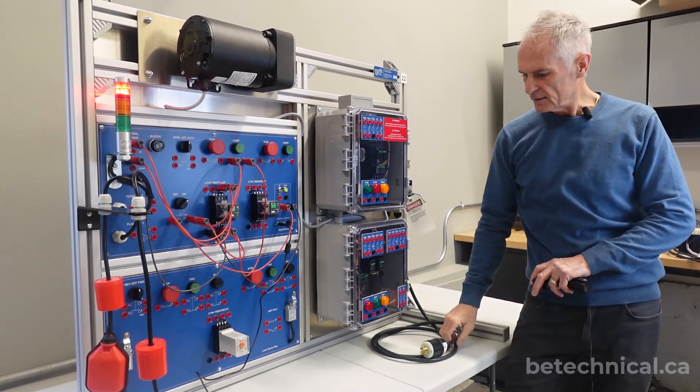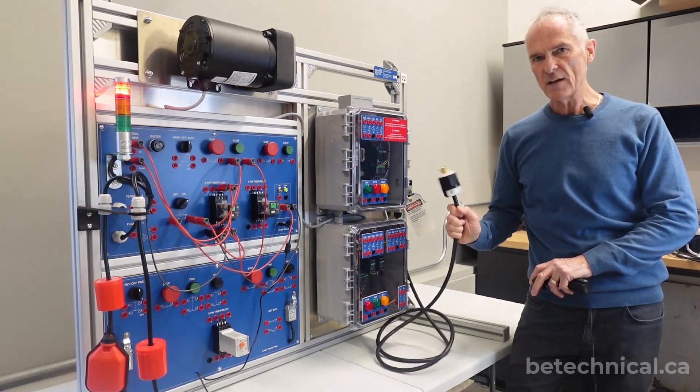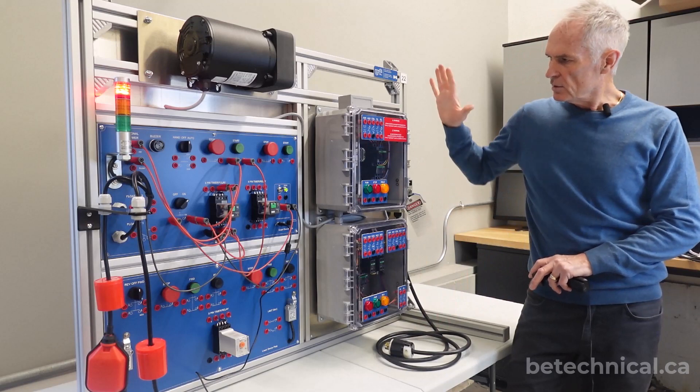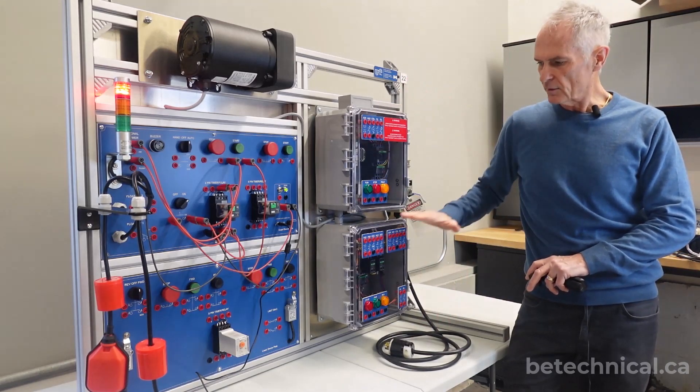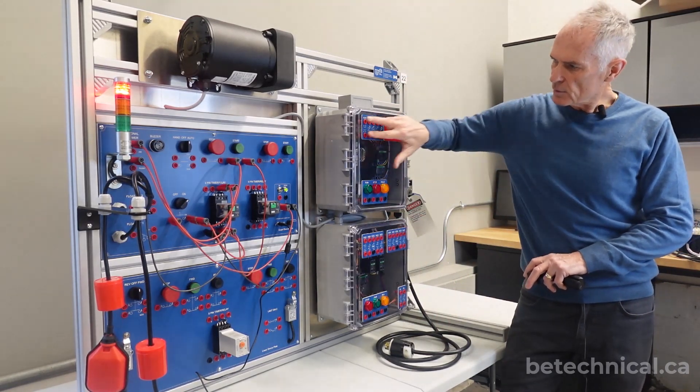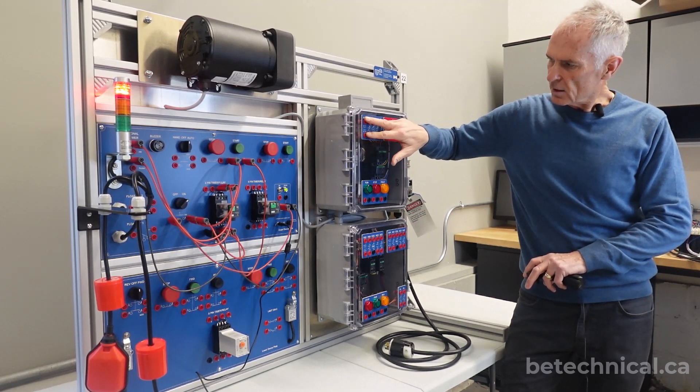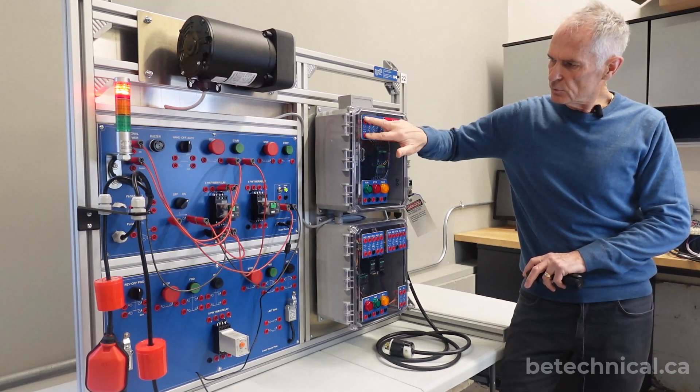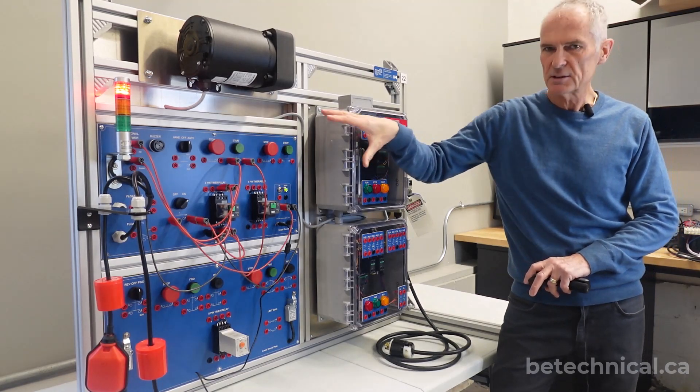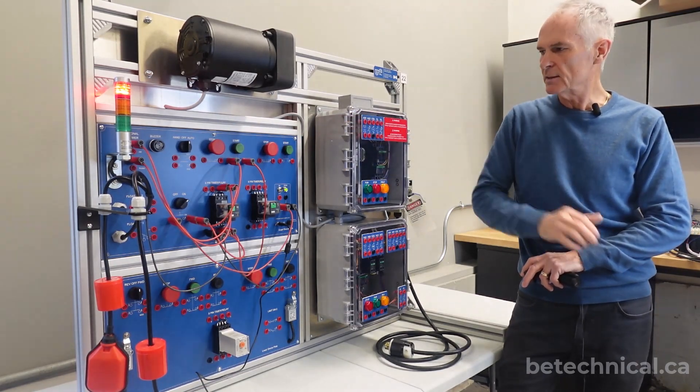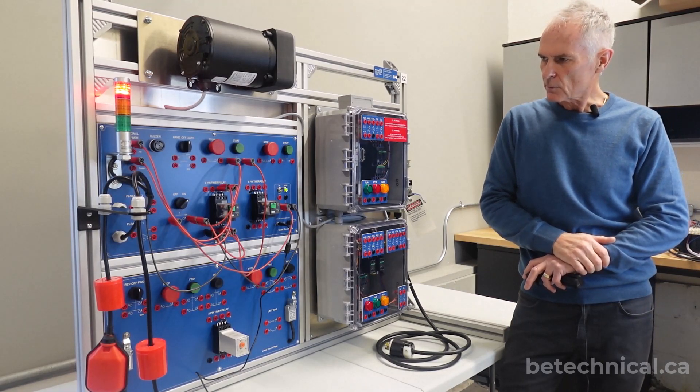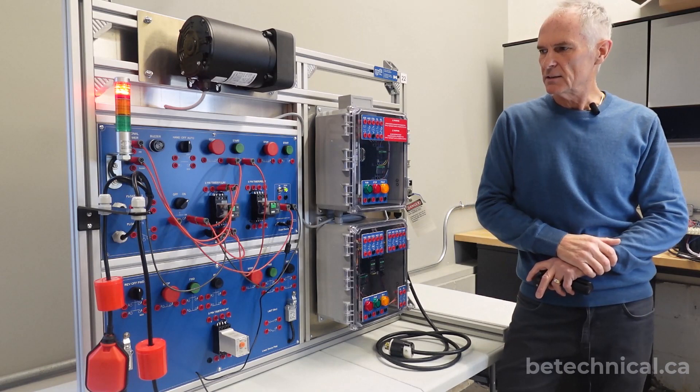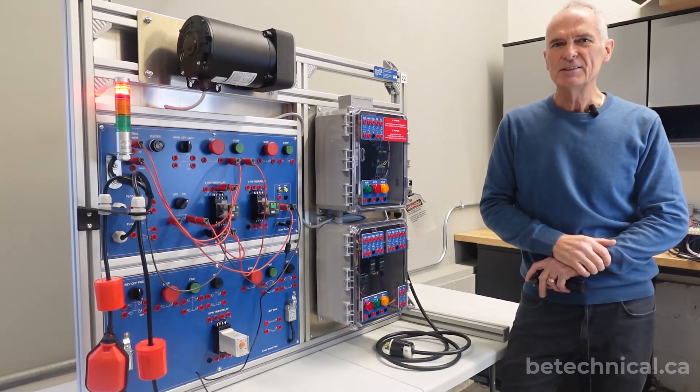So the second section is independently powered with a three phase line supply. We have a non-reversing and reversing starter enclosure and all of the pilot devices are brought out to wiring jacks and we can configure them safely on the low voltage. So what I'll do is I'll spend a little bit of time explaining the two sections and some of the ins and outs of using the system.